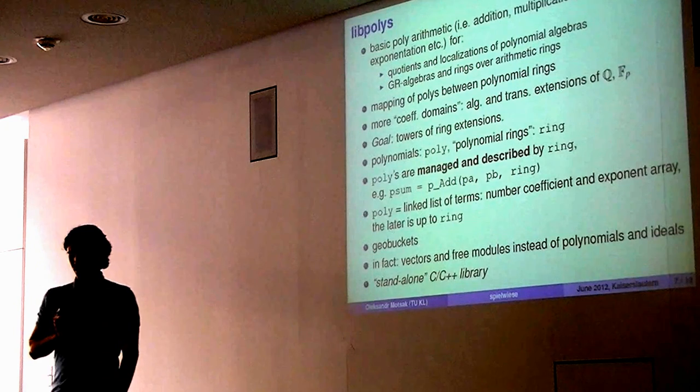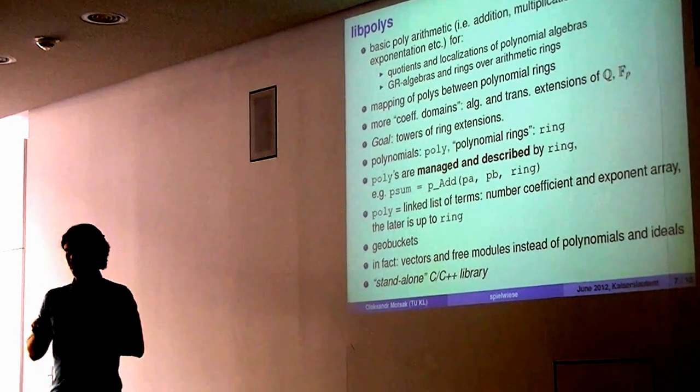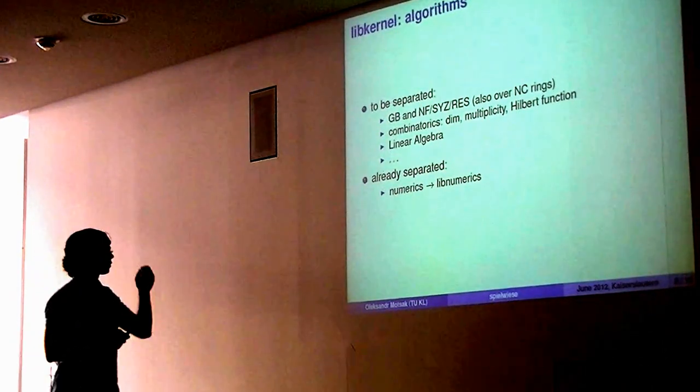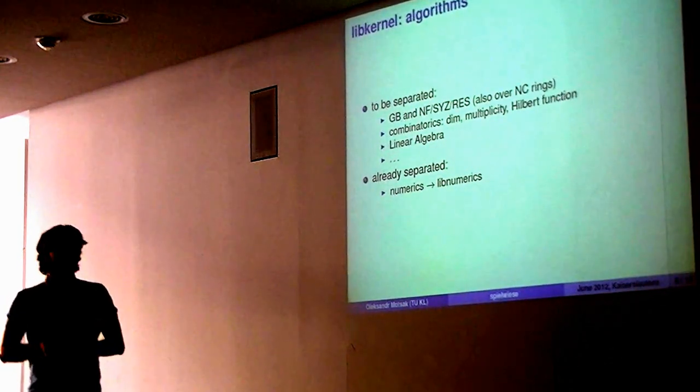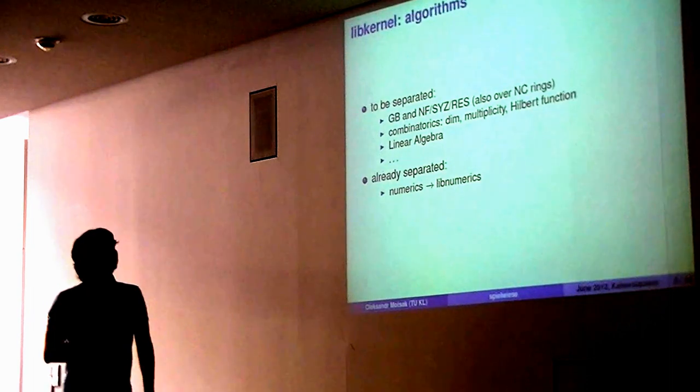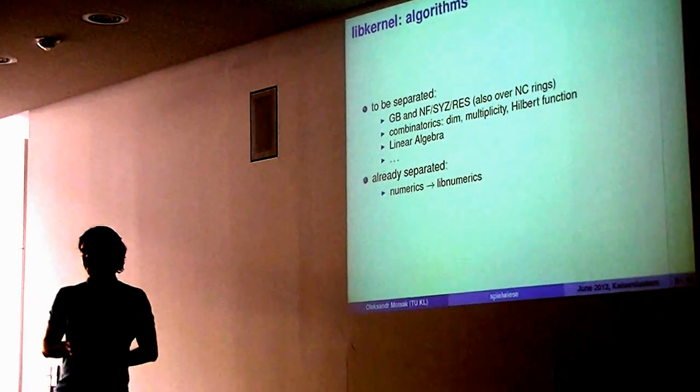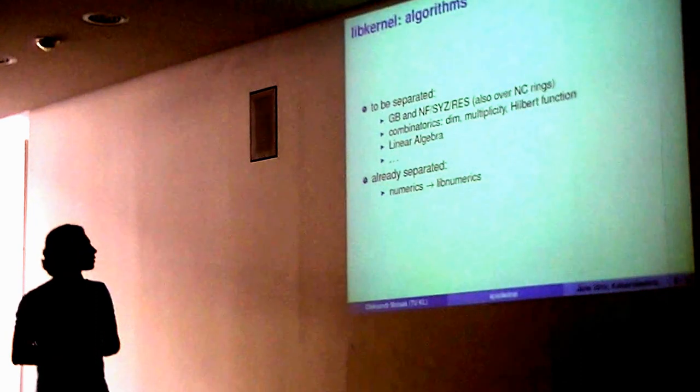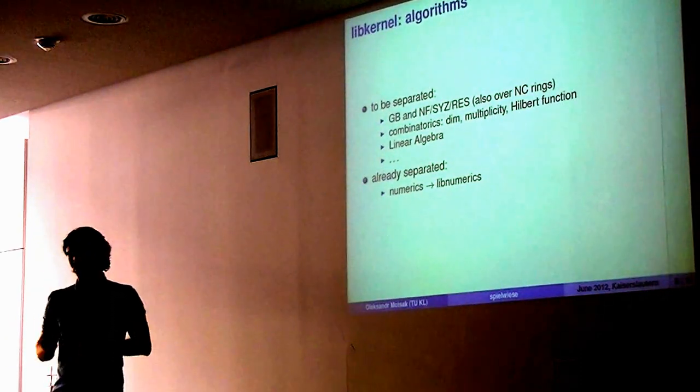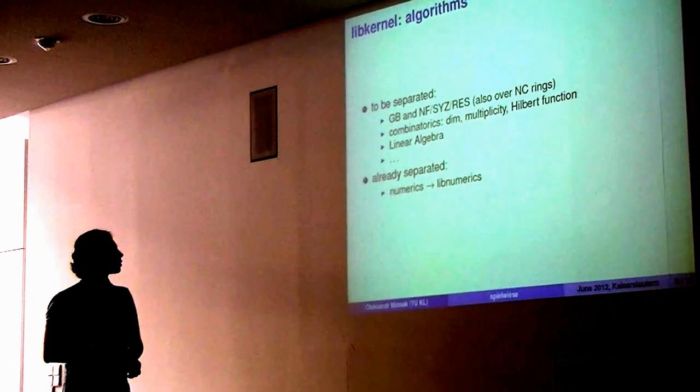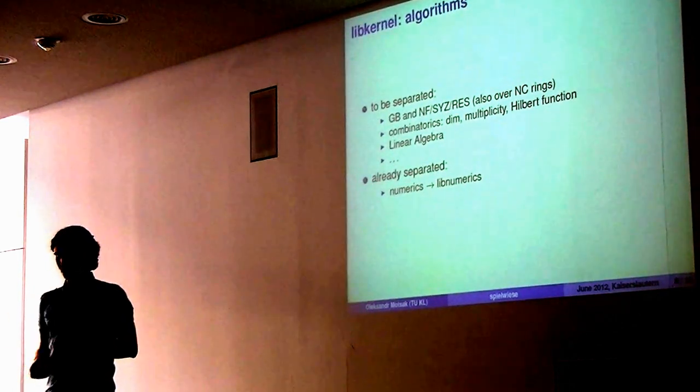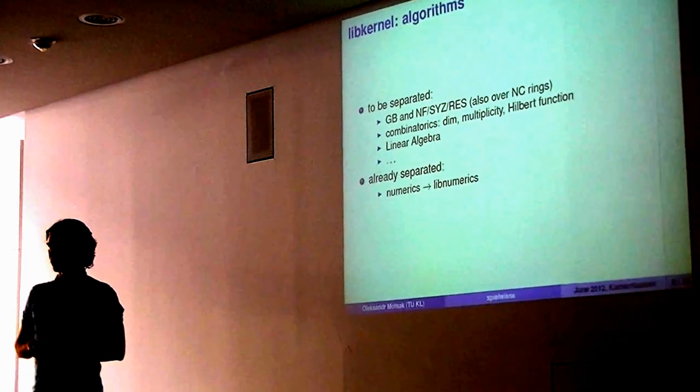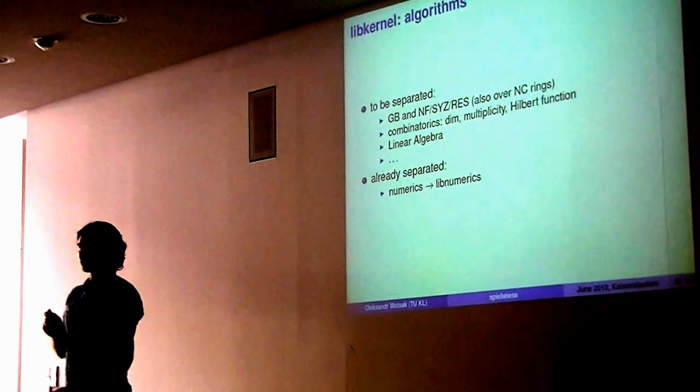So far we don't have any other algorithms there. It's just data structures. So all the algorithms like Grobner bases and normal form and resolutions, you know, for non-commutative rings belong to libkernel, and we are working on separating them. So there are also combinatorial stuff like dimension, multiplicity, Hilbert functions, related to linear algebra and so on. At the moment, it was really easy to separate numerical computations into weak numerics, but it's underdeveloped.